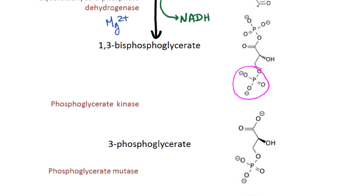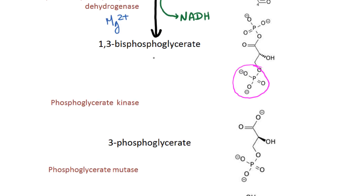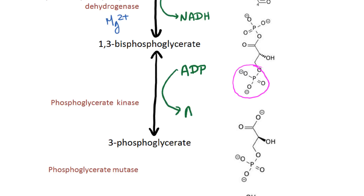The next reaction is going from 1,3-bisphosphoglycerate to 3-phosphoglycerate. In this reaction, ADP is converted to ATP — this is the first time you make ATP. Magnesium is a cofactor in this reaction, which is facilitated by phosphoglycerate kinase.